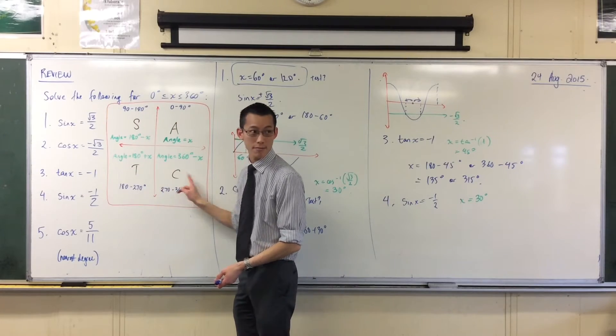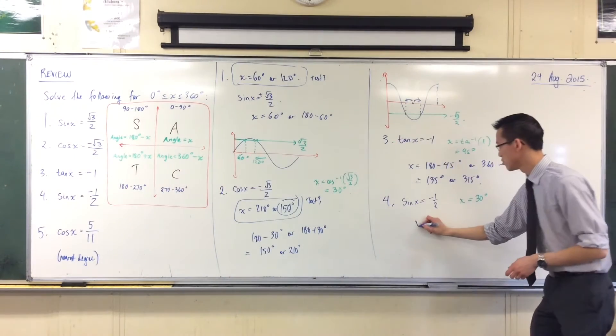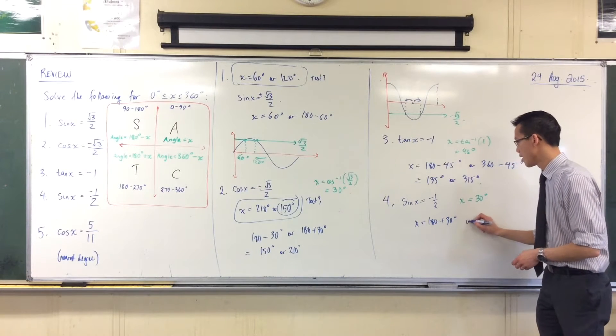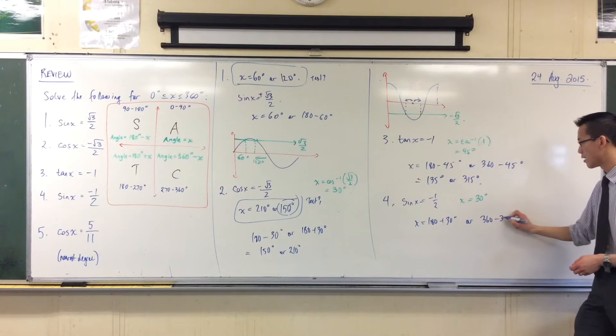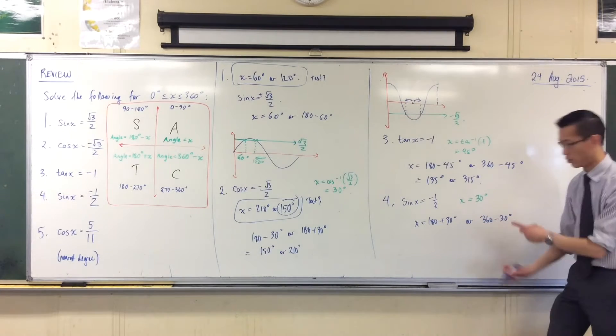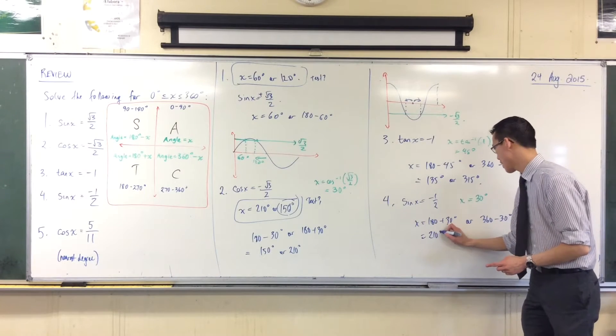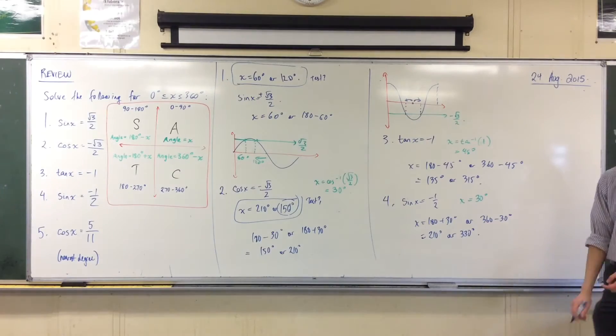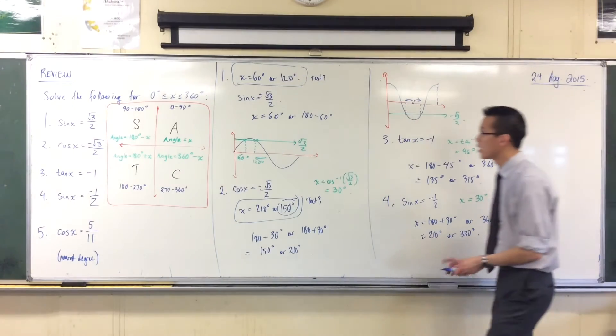3 and 4. See that? 3 and 4. So my solutions will be 180 plus 30 or 360 take away 30. There's my third and fourth quadrant solutions. 210, 330. That sounds silly, doesn't it? Alright, last one. I'm going to rub off my first one.